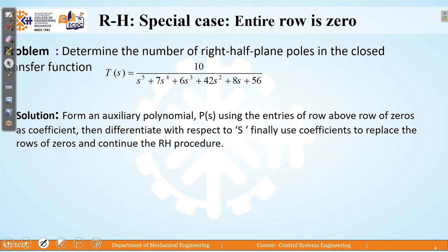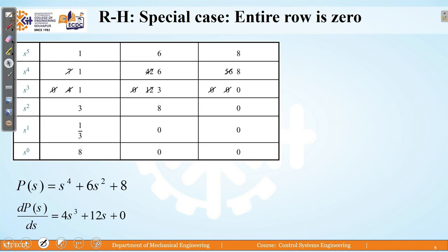We look for the next case. This is again a special case which involves the entire row coming out to be a zero row. Considering this example, you have to determine how many number of poles or roots lie in the right half of the s-plane for this given closed loop transfer function. We will see the preparation of the Routh table. We have prepared the Routh table depending upon the characteristic equation: the first row 1, 6, 8; the second row comes with elements as 7, 42 and 56. Since 7 is a common multiple of 7, we can reduce it to 1, 6 and 8 respectively.